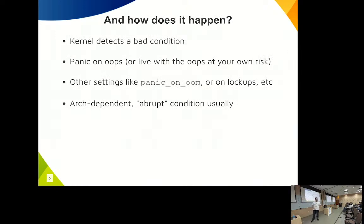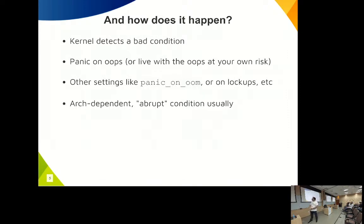The kernel detects the problem and shows those logs. There are some sysctls and tunings you can configure to force a panic. An oops can be lived with, but triggering the panic allows you to recover the system, since a system in an oops state is not reliable — some parts are broken. Tunings include panicking on OOM, on hung tasks, etc. The panic condition is very abrupt and architecture-dependent — registers in the log differ between x86, RISC-V, and ARM.